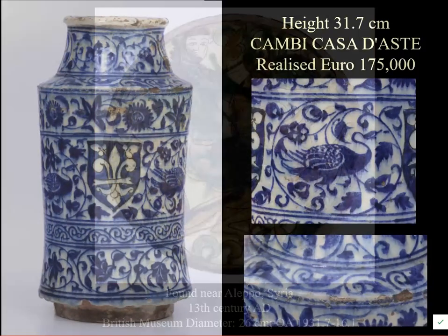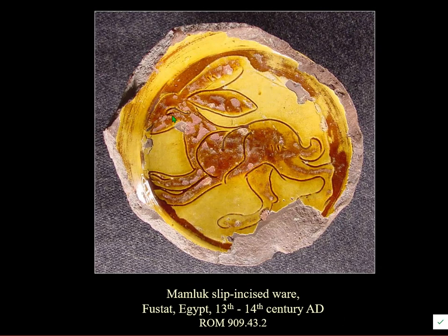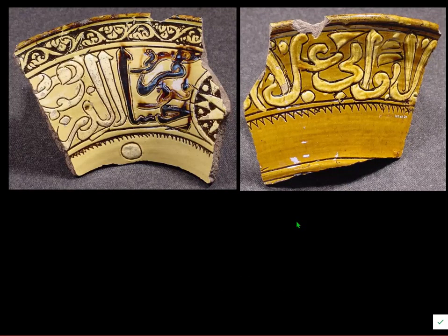Slip-incised wares also become very popular at this time. One found near Aleppo is of this date, and in Cairo there are many examples. One has a charming bunny: the vessel is covered with slip, then incised, with slip excised away to reveal the bunny motif. There's also a lot of calligraphy — these wares have an overall slip, are slip-painted, then incised, and covered with a lead glaze.